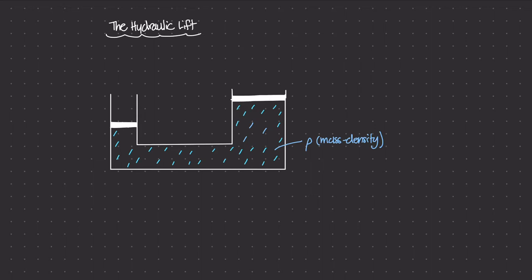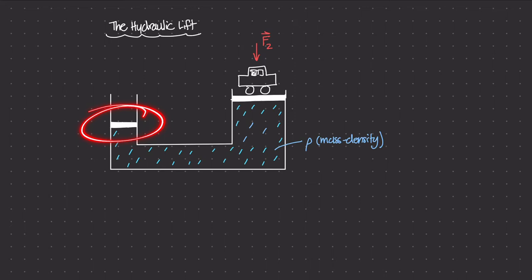Let's say we have a car sitting on piston two. This car is obviously going to apply some force going down on piston two — I'll represent that as a vector called force two, being applied down into the liquid. On the other side of the system, on piston one, we have a balancing force F1 being applied down into the system, using this hydraulic system to counteract the large force F2.